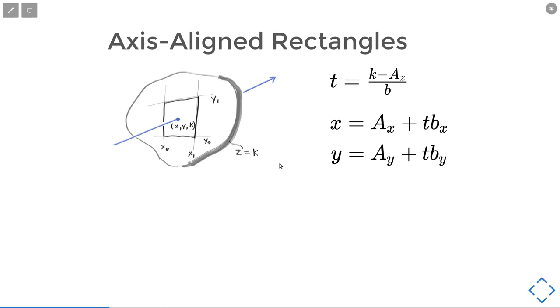The math behind the axis-aligned rectangles is also trivial. First, we calculate t on the z-axis because the axis is already fixed. By the equation of the ray, we can get t equals (z minus az) divided by bz. Then we just apply the ray function to x and y to get the x, y coordinates.